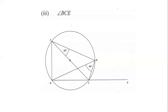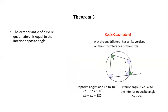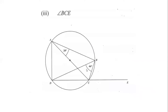Now they ask us to find angle BCE. There are different ways to find it. Looking at another circle theorem, the exterior angle of a cyclic quadrilateral is equal to the interior opposite angle. The exterior angle here is at E, and the interior opposite angle is at A. So whatever angle is at A equals the angle at E. Alternatively, we could use the fact that angles on a straight line equal 180 degrees.